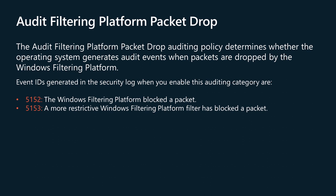The audit filtering platform packet drop auditing policy determines whether the operating system generates audit events when packets are dropped by the Windows Filtering Platform. WFP enables independent software vendors to filter and modify TCP/IP packets, monitor authorized connections, filter IPsec protected traffic, and filter remote procedure calls, RPCs. A higher rate of dropped packets may indicate that there have been attempts to gain unauthorized access to computers on your network. Items written to the security event log when this policy is enabled are listed in the documentation and on the screen.